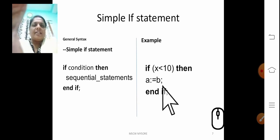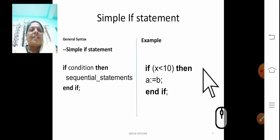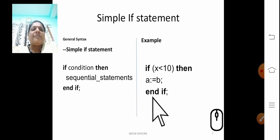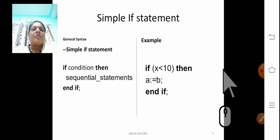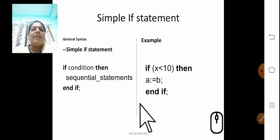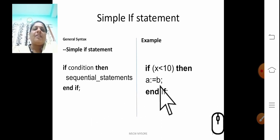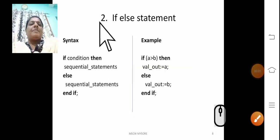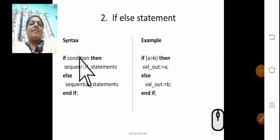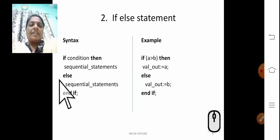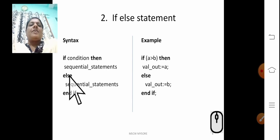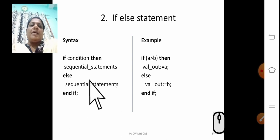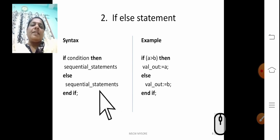If the condition is false, it is not going to execute this sequential statement. Your control goes directly to after the end if statement. The next statement is the if-else statement. Here is the general syntax for the if-else statement. The only difference with the simple if statement is that the else block is added.